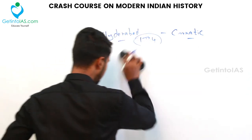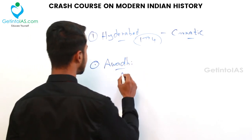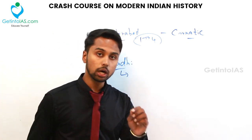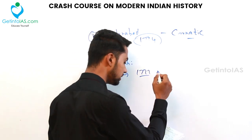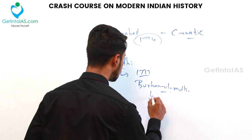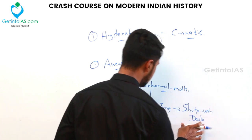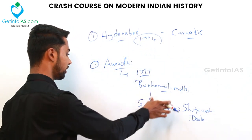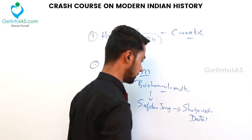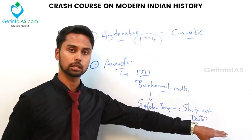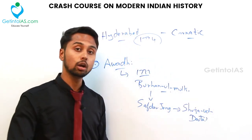The next autonomous state is Awadh — a modern-day state in Uttar Pradesh. It was founded by Sadat Khan Burhan-ul-Mulk in 1722. He was followed by his nephew Safdar Jung, and Safdar Jung's son was Shuja-ud-Daulah. Shuja-ud-Daulah was related to the development of the city of Faizabad and is also connected to the Battle of Buxar.